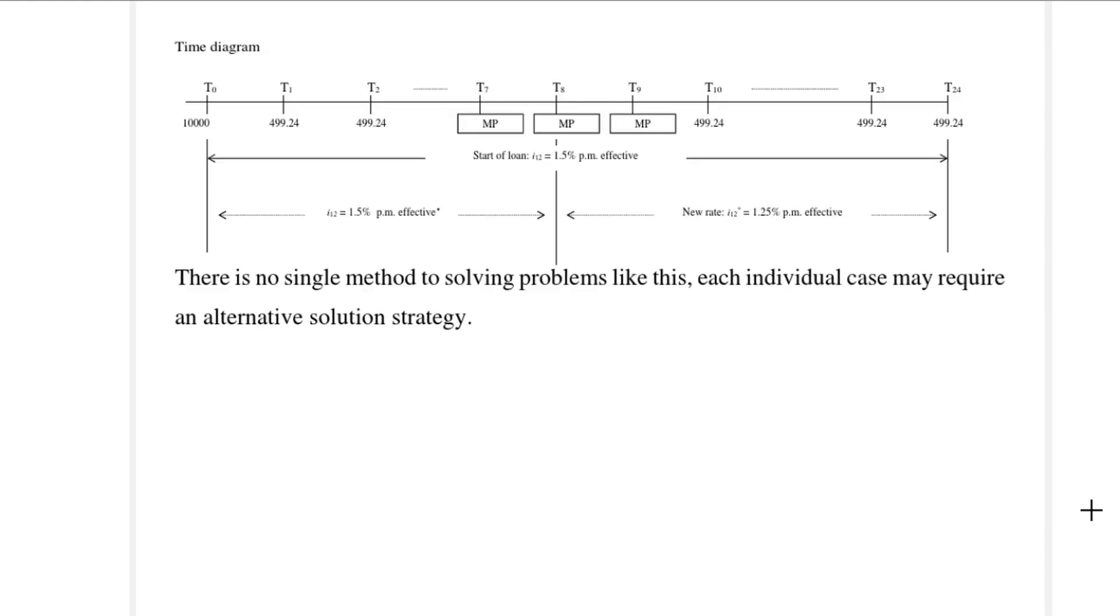So here we've got the timeline, we've got our three missed payments, as well as the change in interest rate at T8. And now we would like to know what the equal payments from T10 to T24 should be. Whenever you get a problem like this, there's no single way of solving this. And you have to treat each of these problems separately. But you have acquired enough skills by now that you should be able to do that. So I think before we continue this video, and before you look at the rest of the notes, I want you to see whether you would be able to find a solution to this problem. The different steps you will take to solve for this problem.